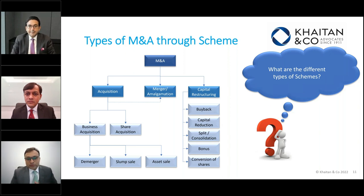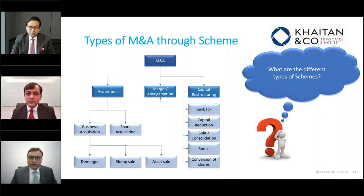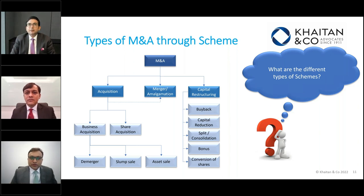For business acquisitions, one can do a demerger, a slump sale, or an asset sale. Demergers are the best examples — you demerge and companies acquire businesses, or you demerge a particular business from a listed entity to another listed or unlisted entity. These structures are the most tax-efficient way of doing a transaction. In a demerger, you just acquire the business into the company — shareholders get the consideration and you avoid the two-layering tax impact.